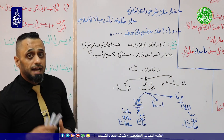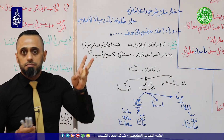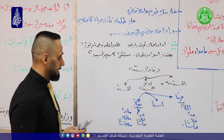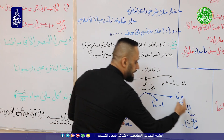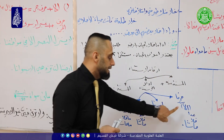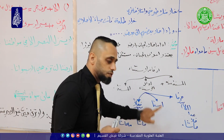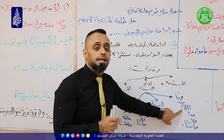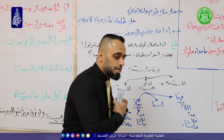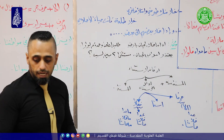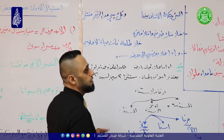رب سائل يسأل: استاذ عدا وخلا وحاشا تكررت مع الحروف والأفعال، إذن ما السبب وكيف أفرق؟ القاعدة: هذه أدوات الاستثناء بأكملها يجب أن تعطي معنى إلا. بمعنى إذا جئت وأزلت عدا وأخللت بمكانها إلا، أو أزلت غير أو سوى أو ما عدا وما خلا وما حاشا وخليت بمكانها إلا، يجب أن يستقيم المعنى. إذا ما استقام المعنى فهذه ليست بأدوات استثناء.